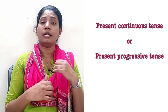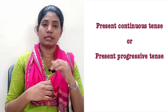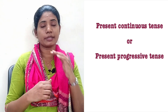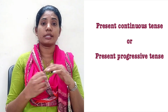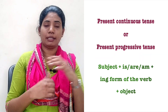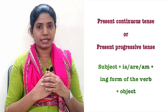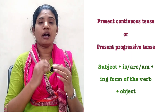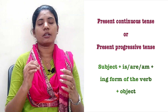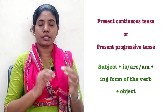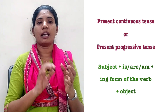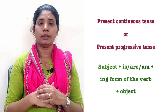Present Continuous Tense, also called Present Progressive Tense, has a formula: Subject plus is, are, or am, plus the ING form of the verb, plus object. For example, subject plus is, are, and am, plus ING form of the verb, plus object.